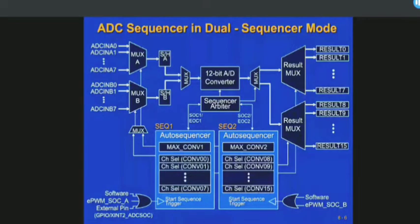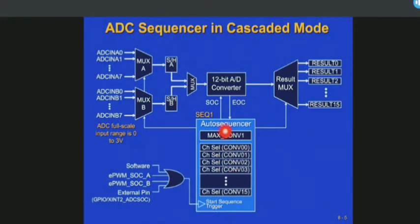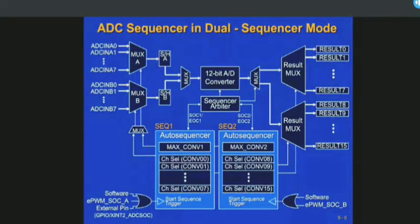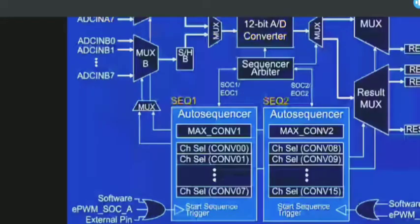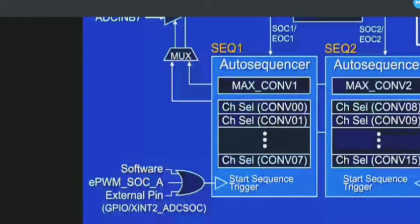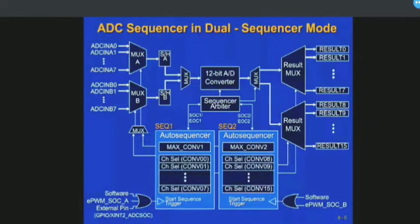The second operating mode of ADC is the dual sequential mode. In cascaded mode, all sequences are connected to sequence one. In dual sequencer mode, the auto sequences are split into two sequences - sequence one and sequence two. Sequence one can be triggered with the help of either software or EPWM SOC A. Similarly, sequence two can be started with the help of either software or EPWM SOC B.